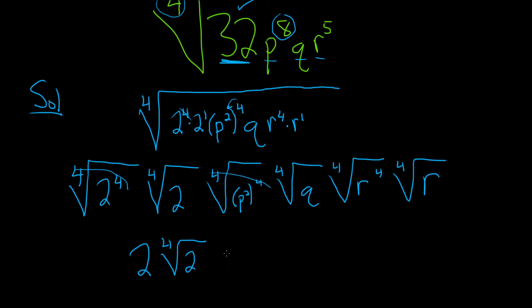And then, boom. P squared, 4th root of Q. R, 4th root of r. Right? Because the 4th root gets rid of the 4.